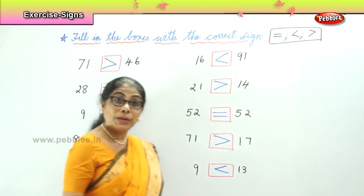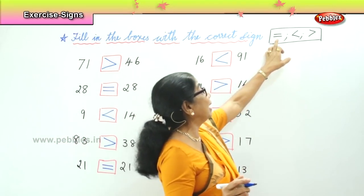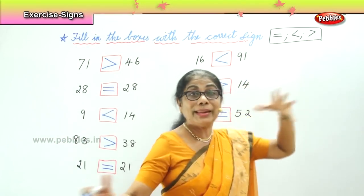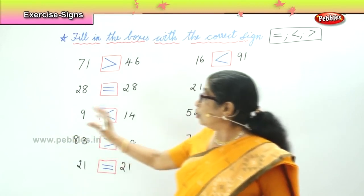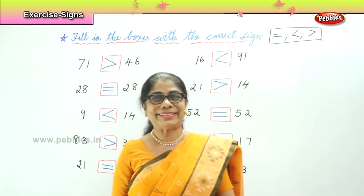We learnt to choose the correct sign — equal to, greater than, and less than — when comparing numbers.